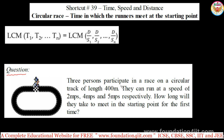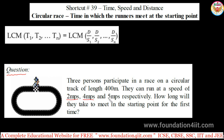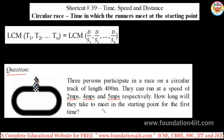Three persons participate in a race on a circular track of length 400 meters. The total length is 400 meters. They can run at speeds of 2 meters per second, 4 meters per second, and 5 meters per second respectively. How long will they take to meet at the starting point for the first time?